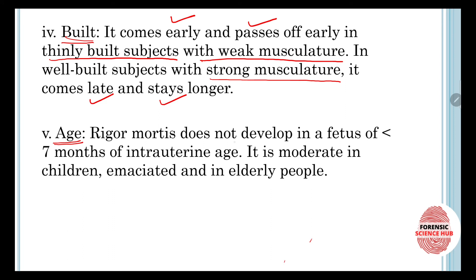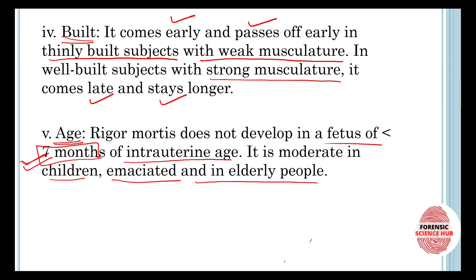Rigor mortis also depends upon the age of the person. Rigor mortis does not develop in a fetus of less than seven months of intrauterine age, because there are very few muscle fibers in that fetus and these muscles cannot contribute to the degree of stiffness required for rigor mortis. In healthy adults, rigor mortis develops slowly but is well marked. It is weak and comes early in children and the elderly.